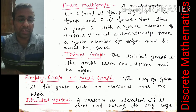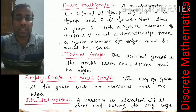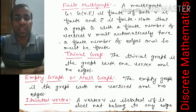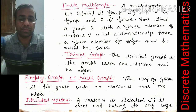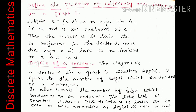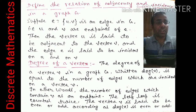An isolated vertex: a vertex V is isolated if it does not belong to any edge — meaning it is not connected to any other vertex in the graph.